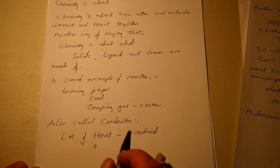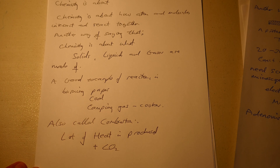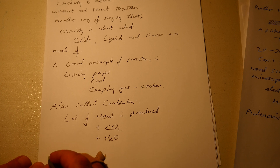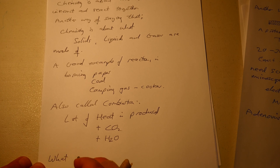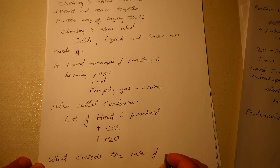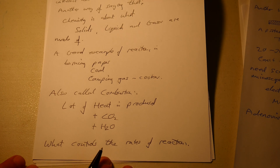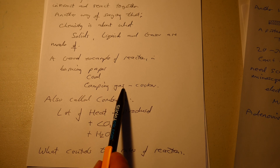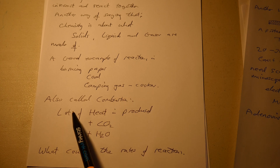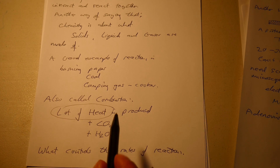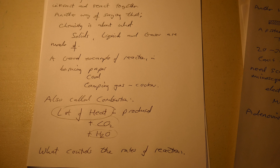When you burn any of these things you also get carbon dioxide made, and also water. So when you burn paper, coal, or camping gas - whether you're camping or when you turn the cooker on in your kitchen - you get a flame. This is combustion, and a lot of heat is made, plus CO2 and water. But what controls the rate?